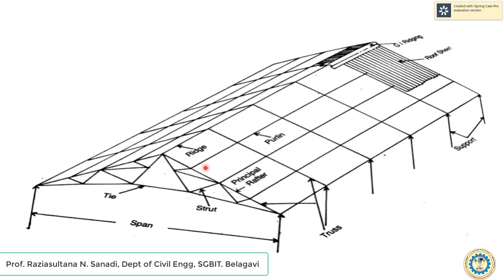The principal rafter is the top inclined member of the truss extending from the ridge to the eaves. It is also called the top chord. They support the roof covering through the purlins and are mainly compression members.